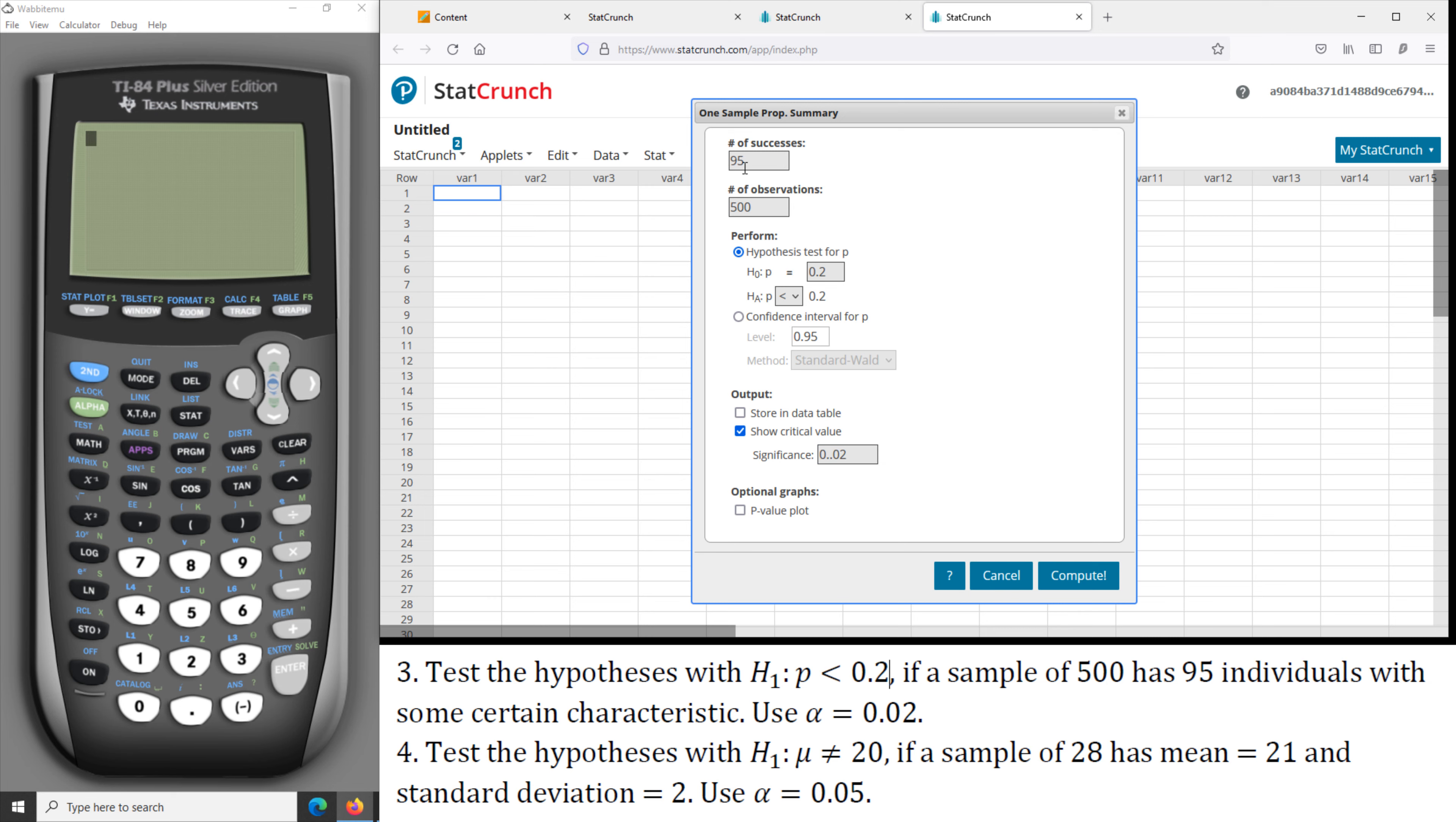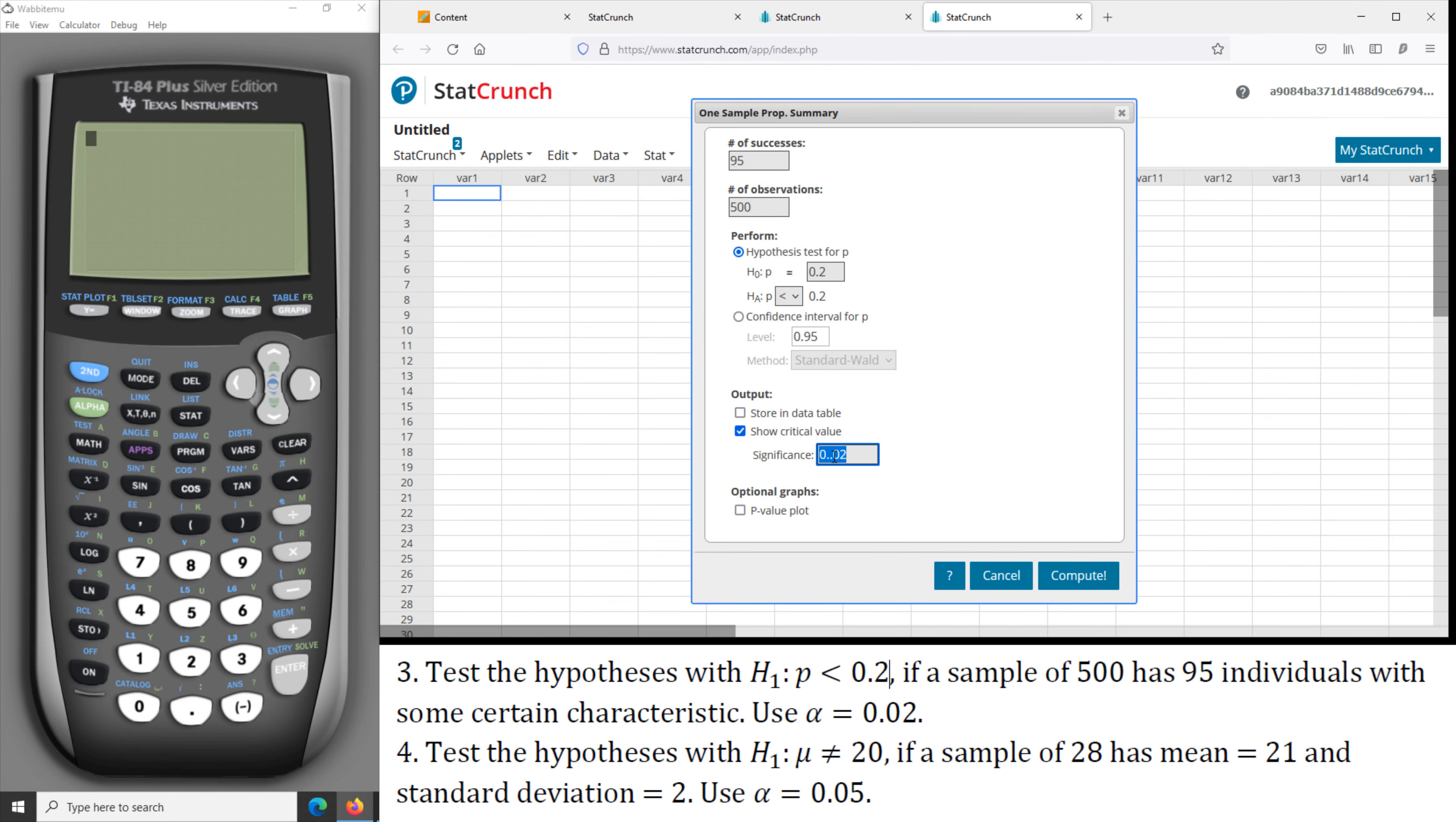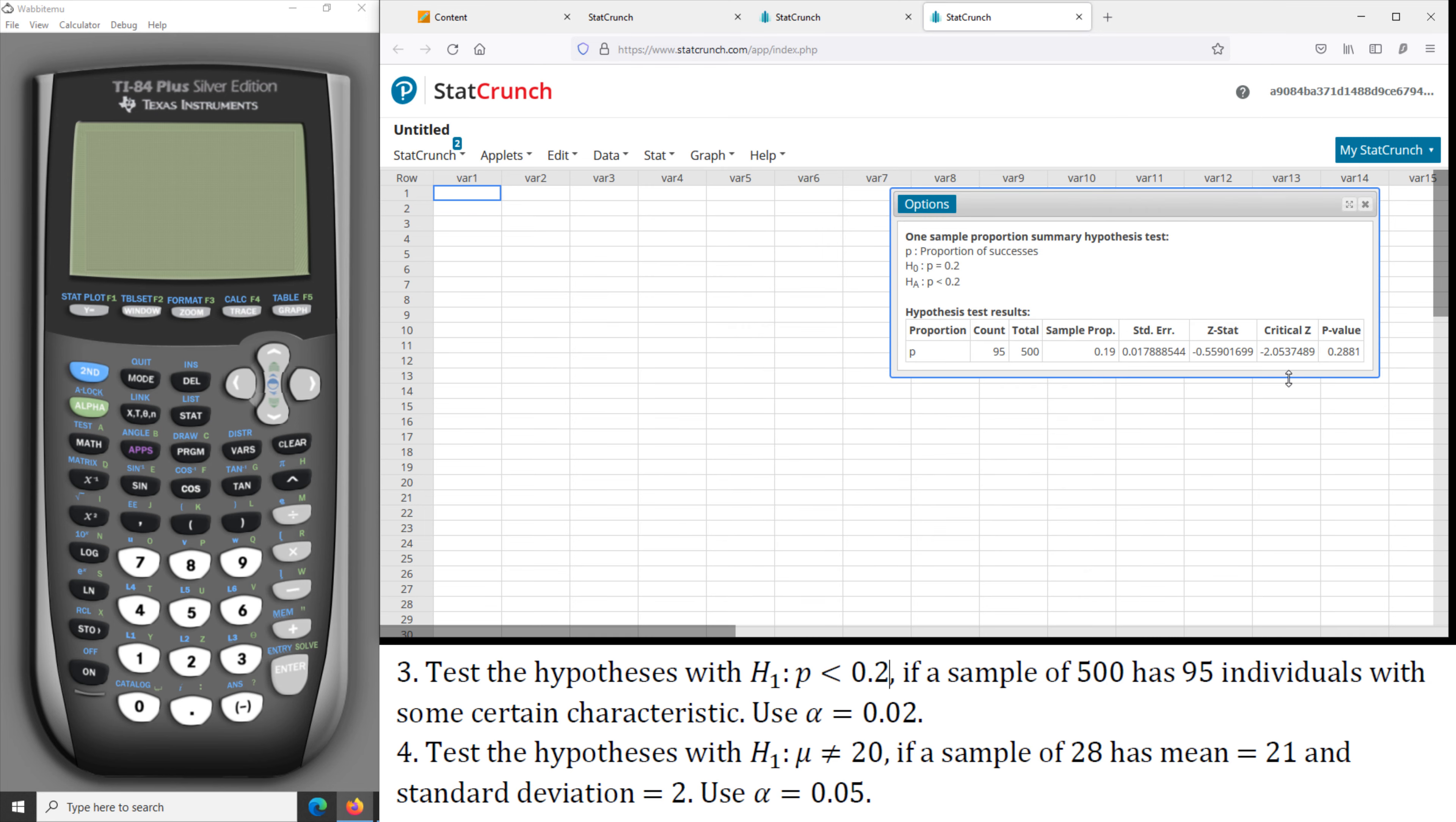So that's the information we have. Compute. Sorry, should be only one decimal point. So we have the P-value of 0.2841, it's bigger than alpha, so we do not reject the null hypothesis.